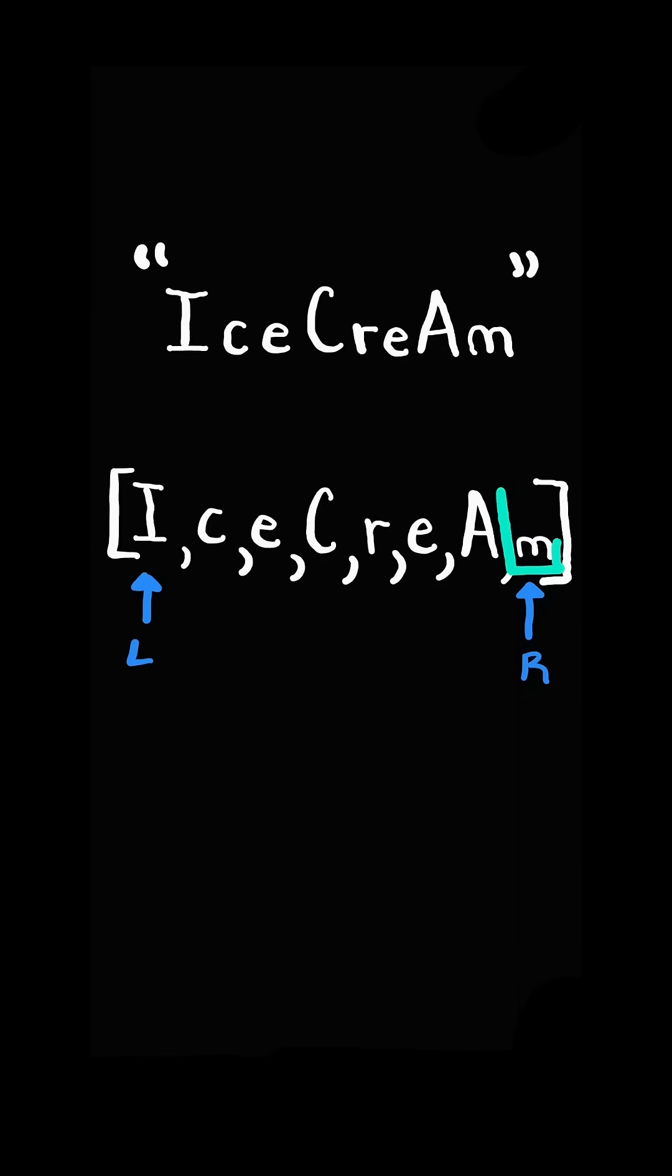If the pointer points to a non-vowel, then we advance the pointer and we continue. Now both pointers point to a vowel. So we swap the characters and advance both pointers.